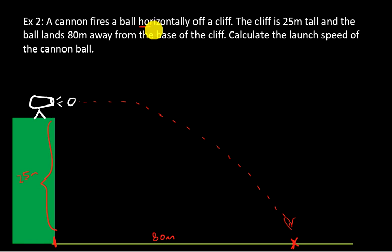It also tells me the ball is launched horizontally. So again, it's going to have some initial velocity in the x direction. Its initial velocity in the y direction is zero because it's fired horizontally. Those are the things I know.